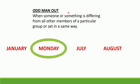Did you know what is odd man out? Odd man out means when someone or something differs from all other members of a particular group, they are said to be odd man out. Let's see an example of it.